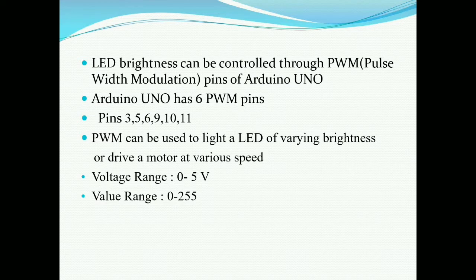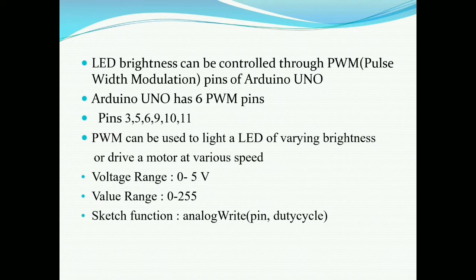The function which is used is analogWrite function, and the parameters are pin number and the duty cycle. Using this analogWrite, we have to mention the pin which we are using as a PWM pin in our program, and the second parameter is a duty cycle. As we adjust the duty cycle, we input the value between zero to 255, and that will be accepted as a duty cycle and the PWM pin will generate the voltage corresponding to that particular value.